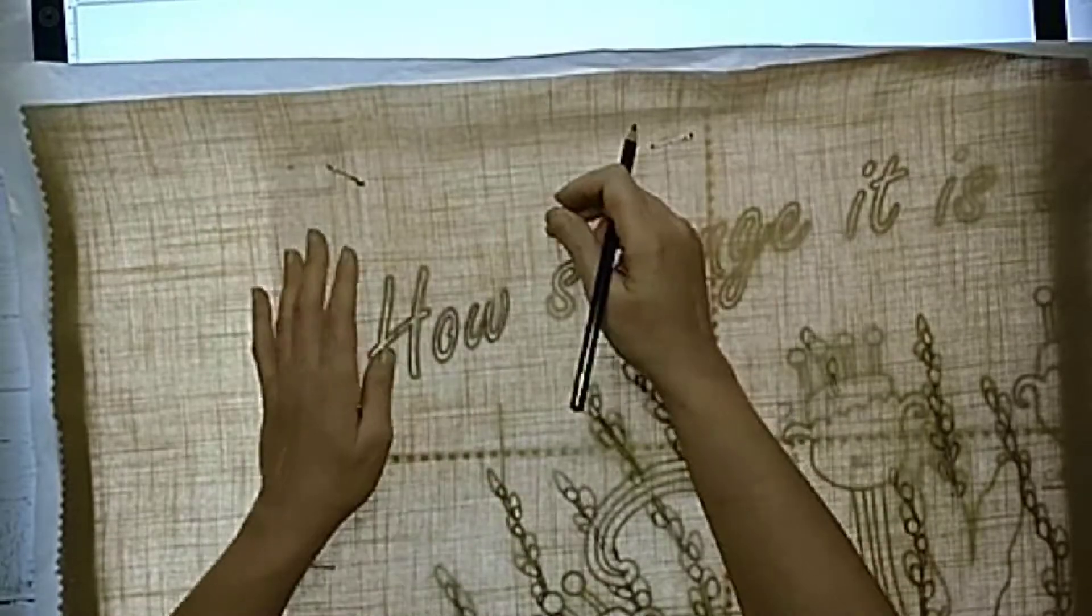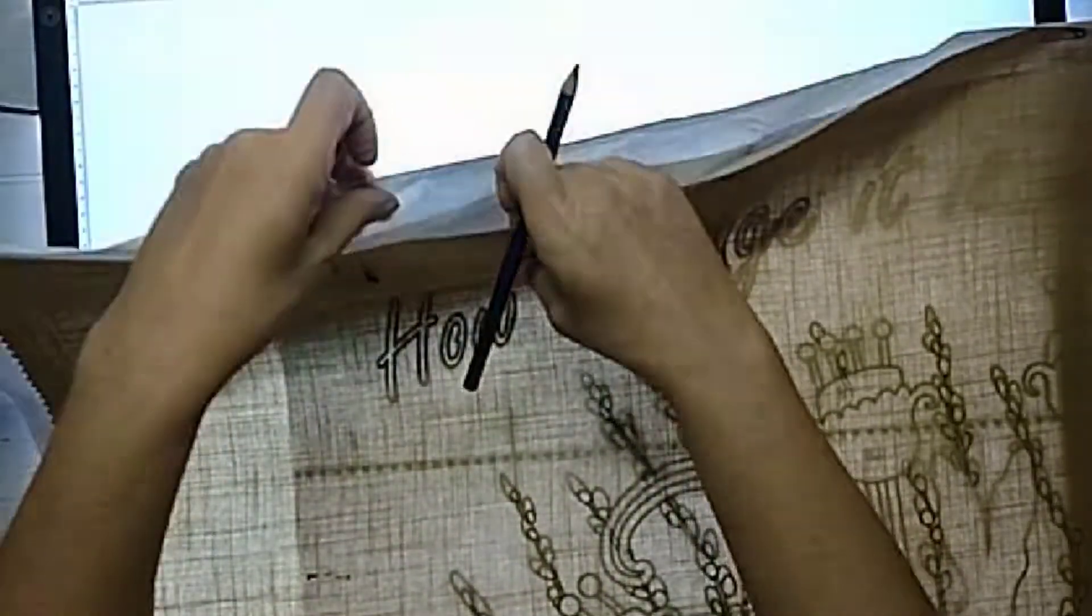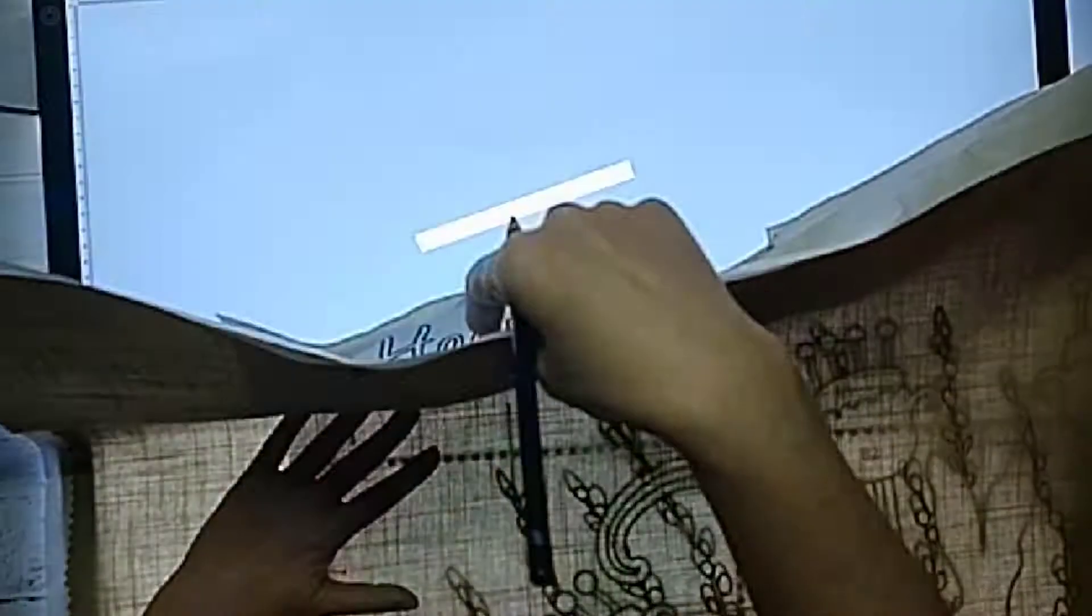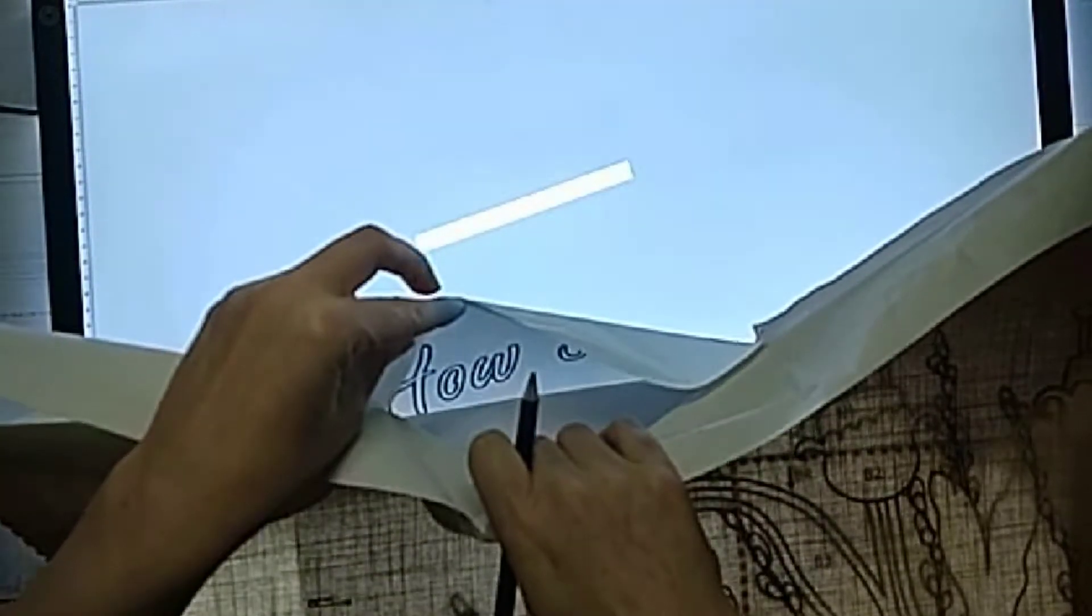Lift a corner of the fabric away from the pattern to see if you've missed any lines. Just check in an area where you don't have it pinned down.